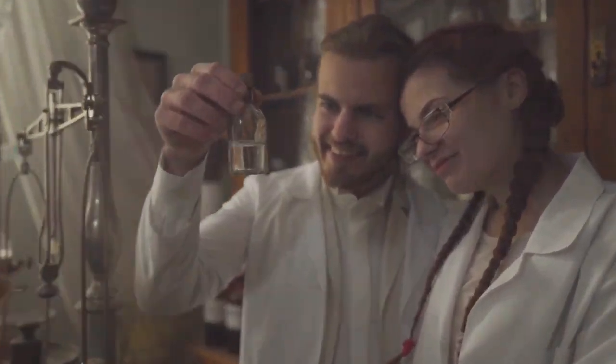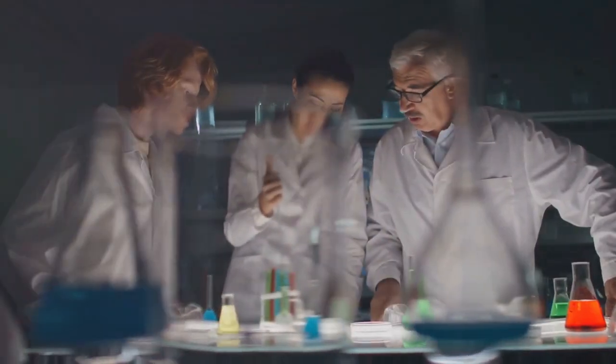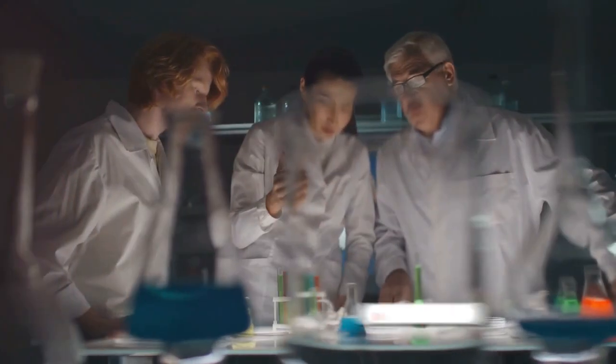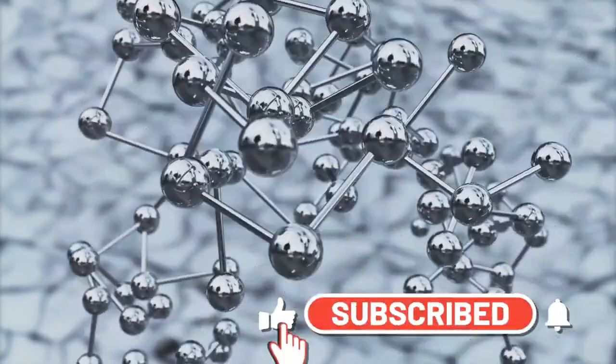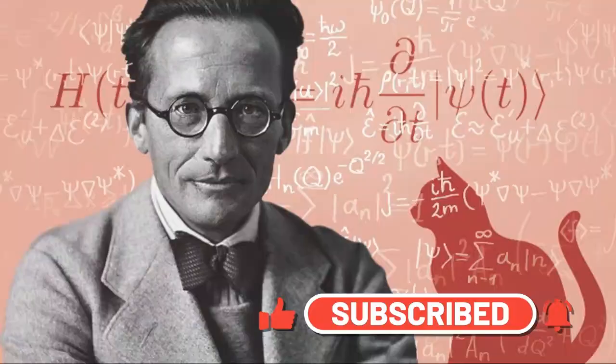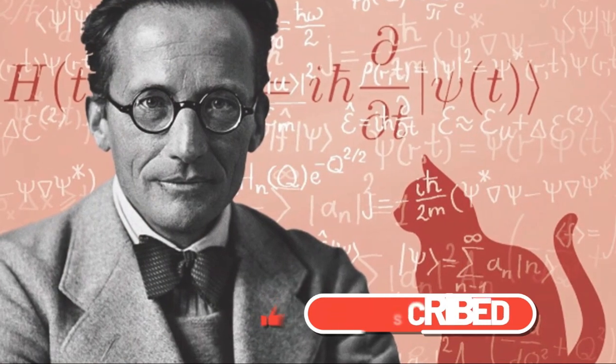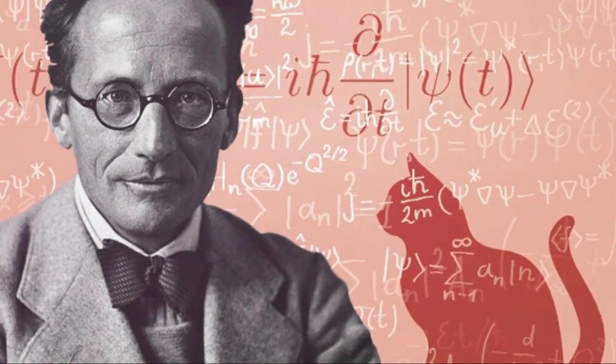The 1930s was a time of great upheaval in physics. Scientists were grappling with a new theory called quantum mechanics. This theory described the behavior of matter at the atomic and subatomic level. Erwin Schrödinger, an Austrian physicist, was a key figure in this revolution.